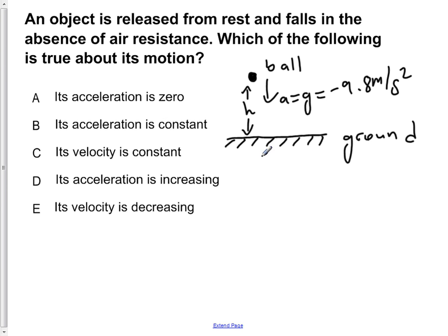A states its acceleration is zero. Well, we already stated that our acceleration is equal to g, which is the acceleration due to gravity, which has a value of negative 9.8 meters per second squared. So our acceleration is non-zero. So A is wrong.